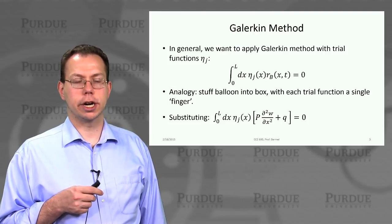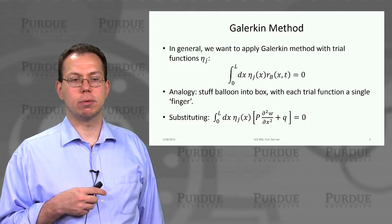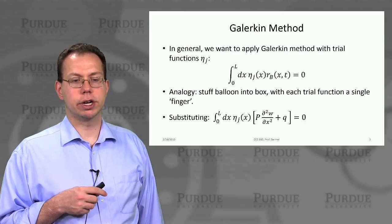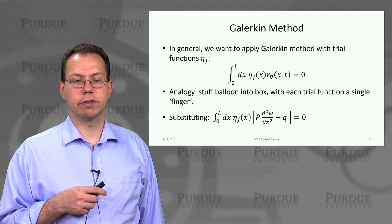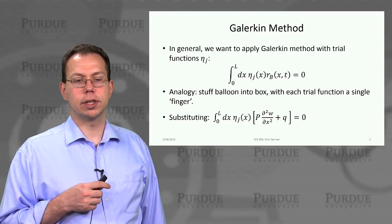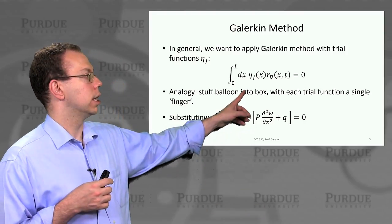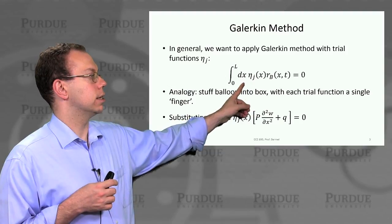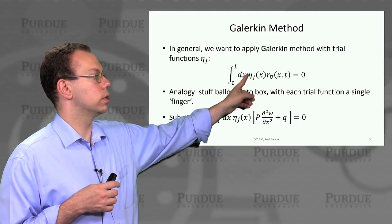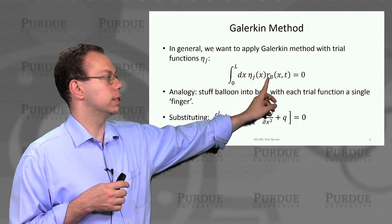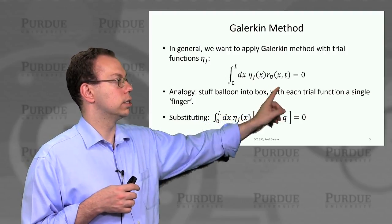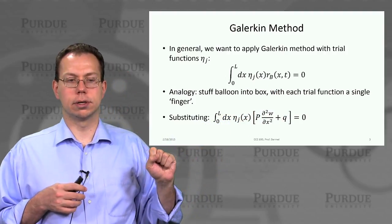Now we want to apply the Galerkin method to this problem. We're going to create a set of trial functions. The trial functions will multiply this residual error at each point. Then we're going to insist that, integrated over the whole interval, the trial function times the residual error function should integrate to zero.